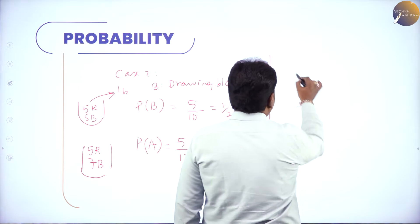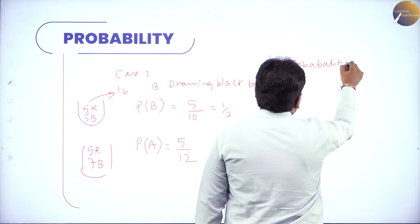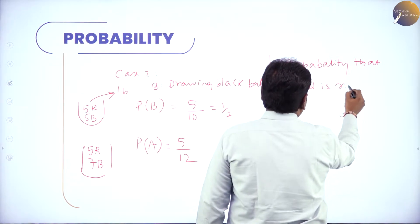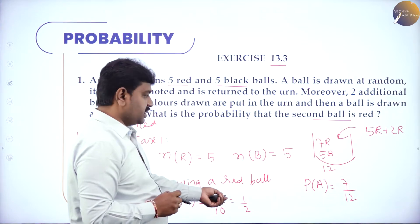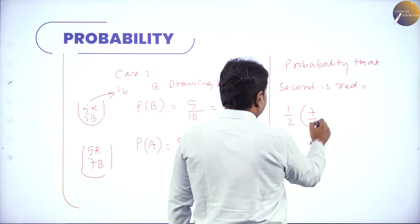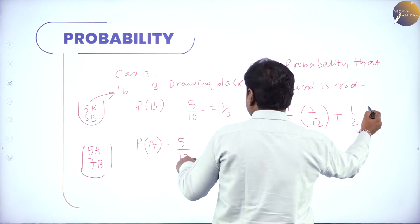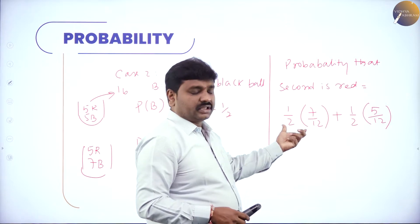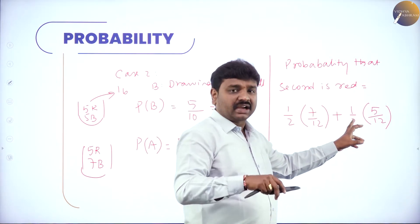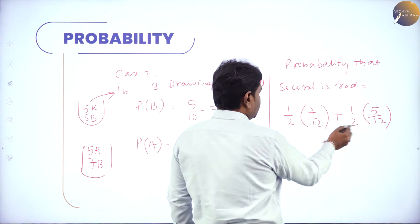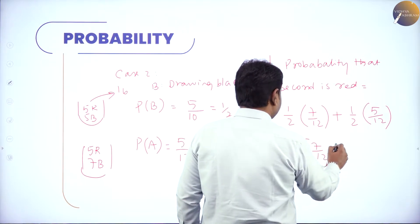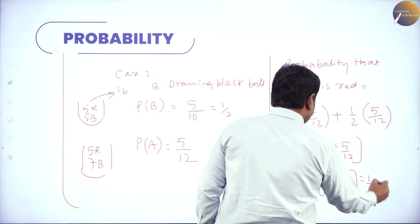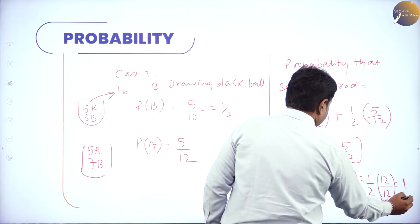What is the probability that the second ball is red? Two possibilities: first red and second red is one case (1/2 × 7/12); first black and second red is the other (1/2 × 5/12). In both cases second ball is red, so we add. Taking 1/2 common: 1/2 × (7/12 + 5/12) = 1/2 × 12/12 = 1/2. The answer is 1/2.